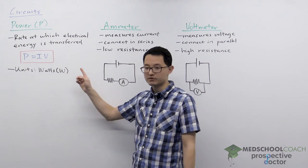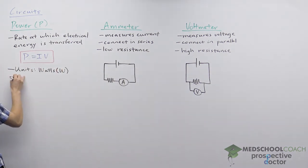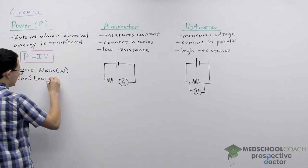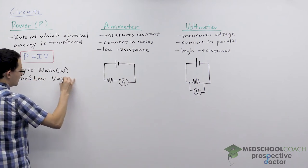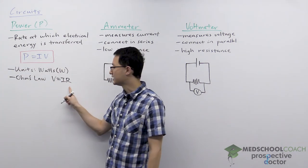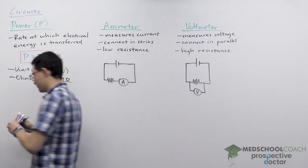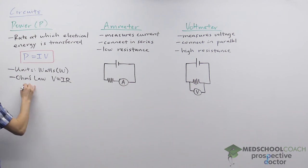Now sometimes you might see other equations for power, but it's really just applying Ohm's law. Remember Ohm's law is simply V equals IR. So if you wanted to, in this equation for P equals IV, you can plug in V for IR, and then you would get another equation for power, which is power equals I squared R.